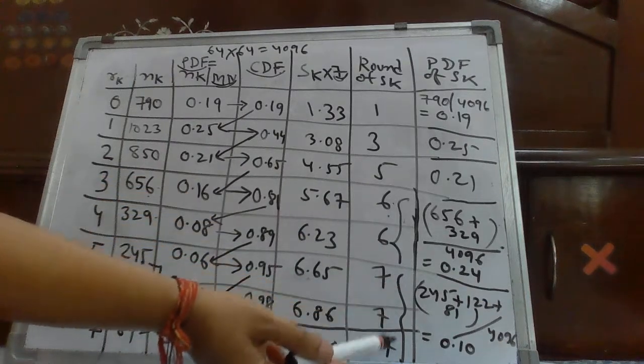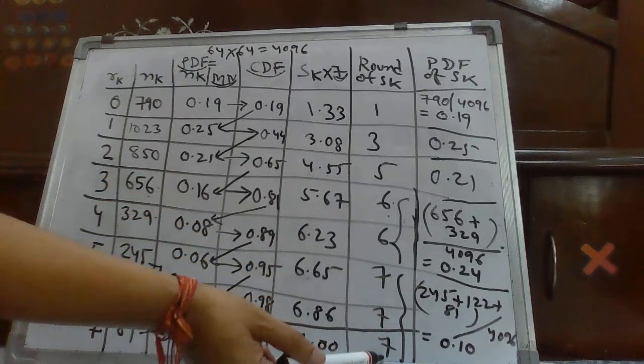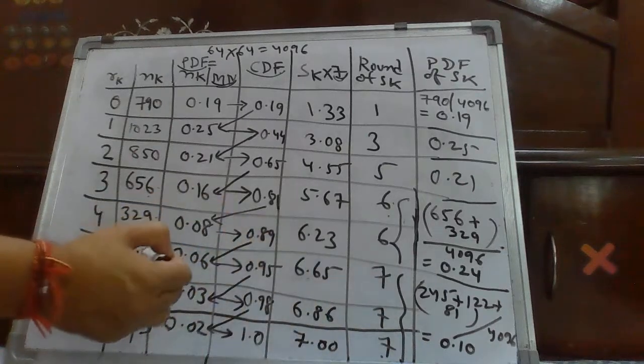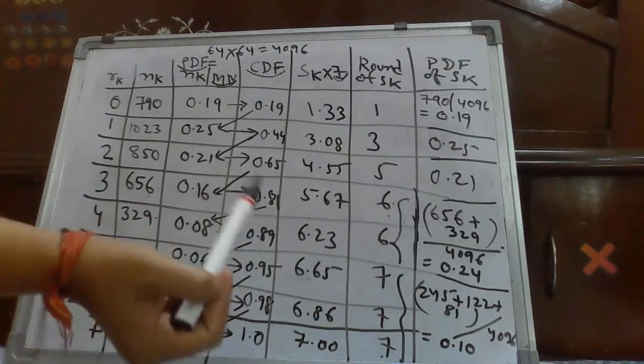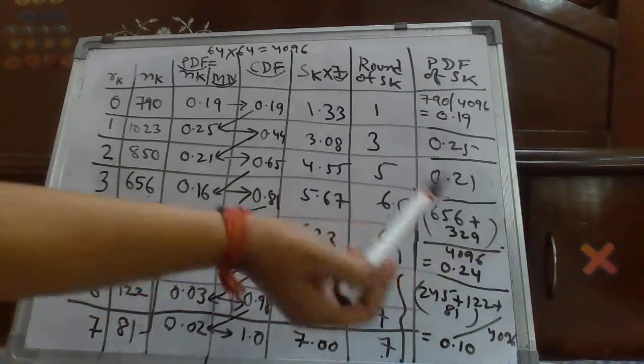Similarly, for these three labels, you are again obtaining the same label. So, all three pixels will be added, 245, 122 plus 81. And then, we will divide with MN.